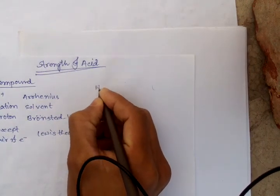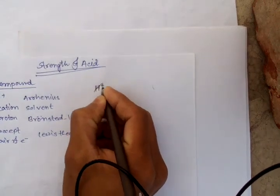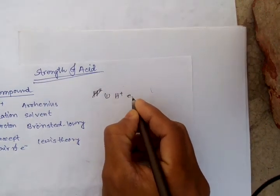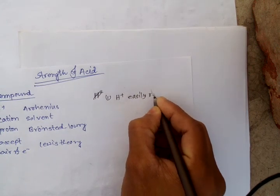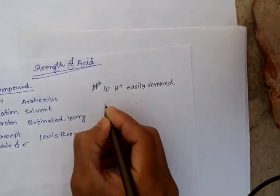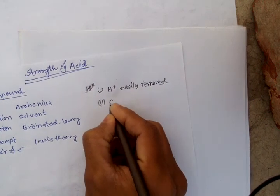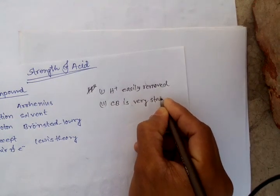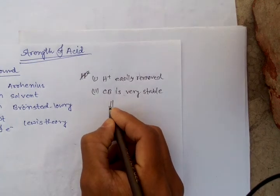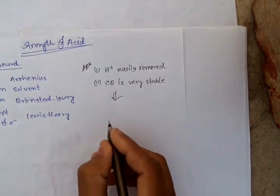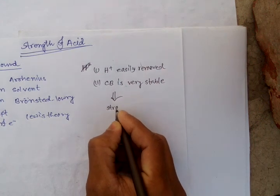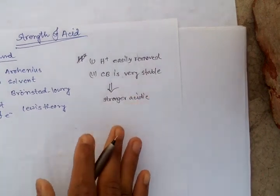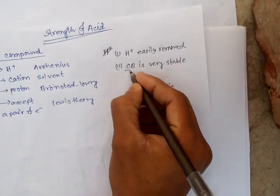When hydrogen ions are easily removed — condition one — and when the conjugate base is very stable — condition two — then we can say this compound is a stronger acid in nature.